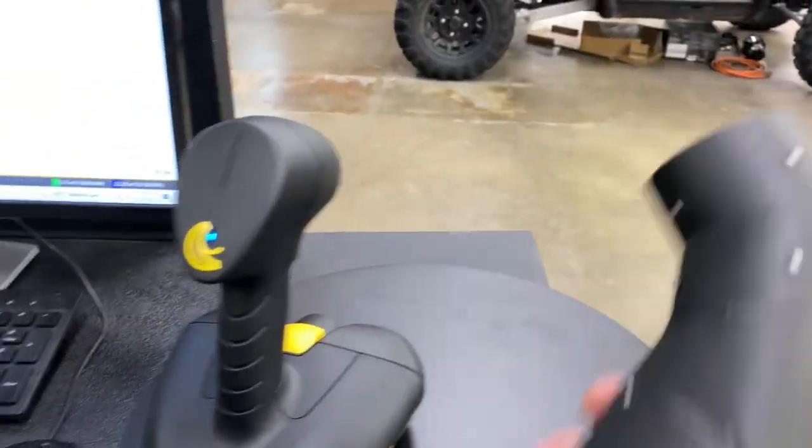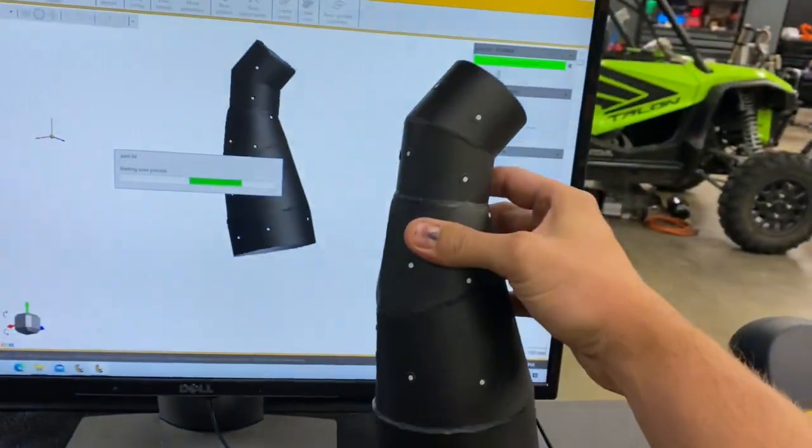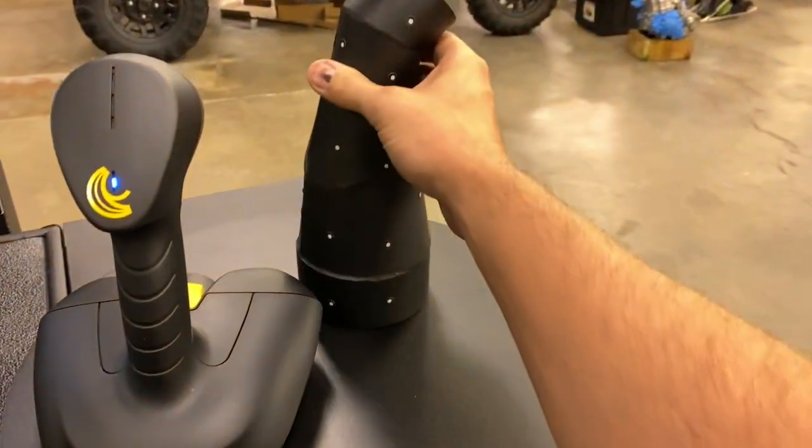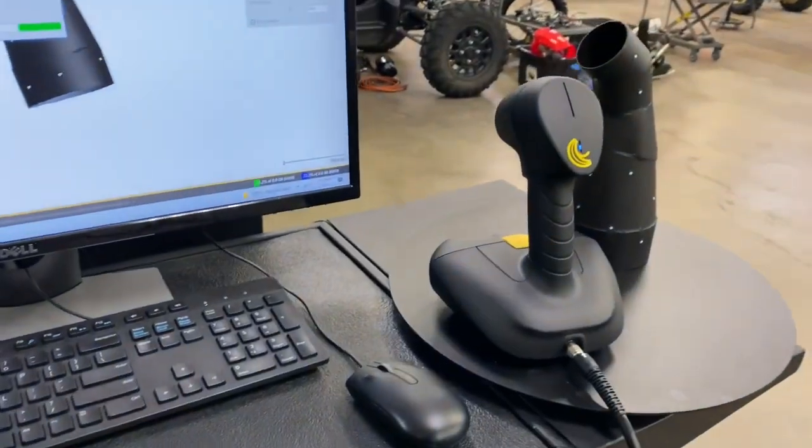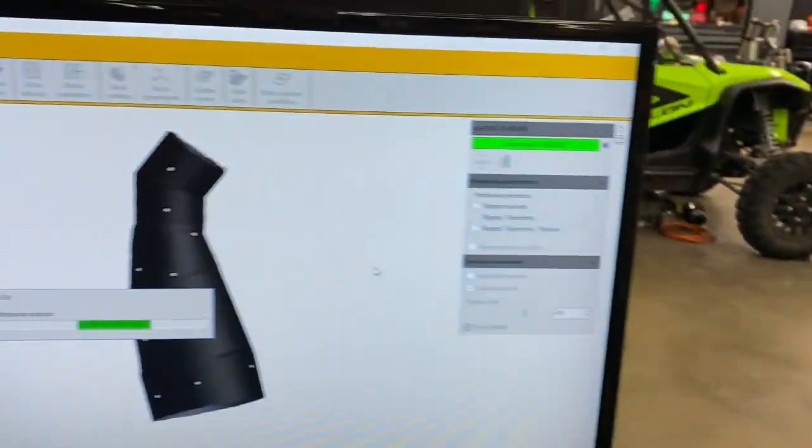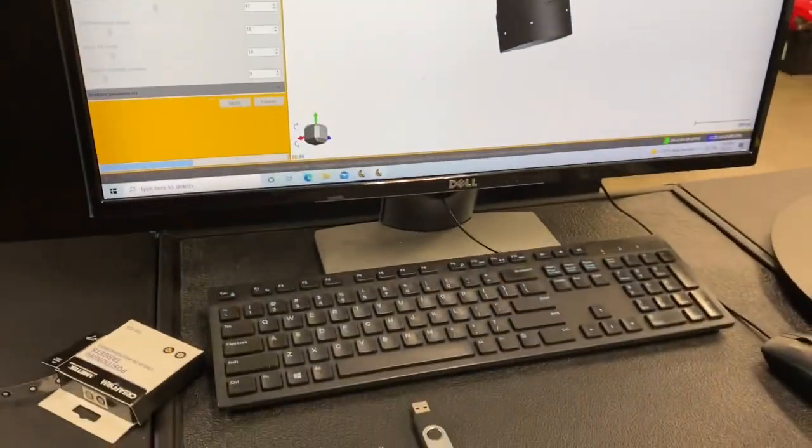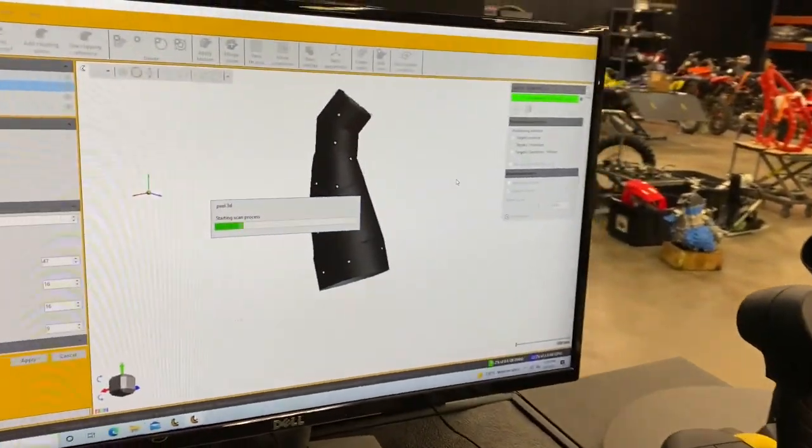That's pretty much it guys, we got this thing scanning in the computer, looks pretty good. We're gonna look into actually doing some possible 3D printing on some parts like that that are very hard to fabricate. Stay tuned for the next video, comment below if you want to see something else scanned. We've got hundreds of parts in this shop that we can scan.